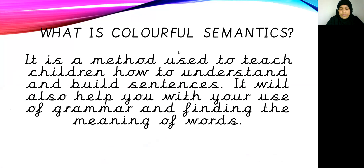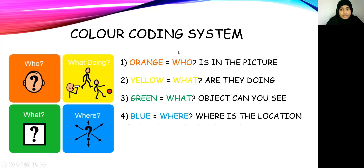For those of you who have missed your first lesson for colourful semantics, let me go through the details of how colourful semantics works. It has a colour coding system in place. For orange, level 1, you need to say who you can see in the picture. For yellow, level 2, you need to say what they're doing in the picture. For green, level 3, you need to say what object you can see in the picture. And for blue, level 4, you need to say where is the location — where is the place in the background of the picture.